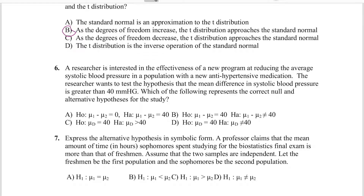Number six is setting up a null and alternative hypothesis. It's not a two-tailed test because we want the value to be greater than 40 milligrams. Our alternative hypothesis is going to be greater than 40, and we're measuring the difference between two groups, so we use mu of delta. We take A and B out because those don't give us the delta. The answer is C. D has not equal to 40, which would be a two-tailed test, and we don't want that.